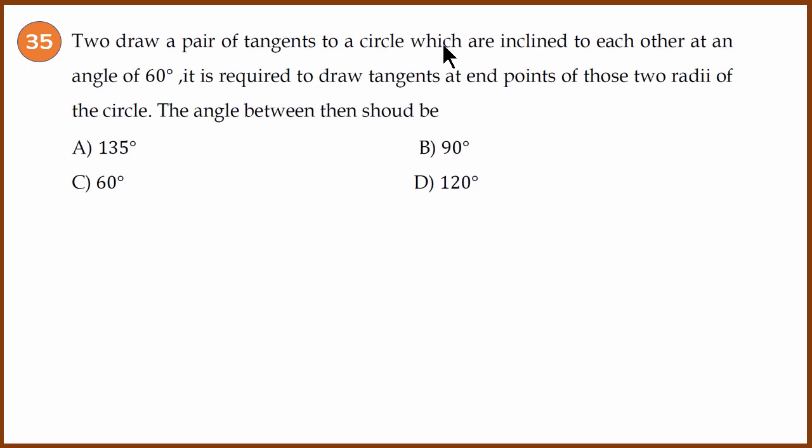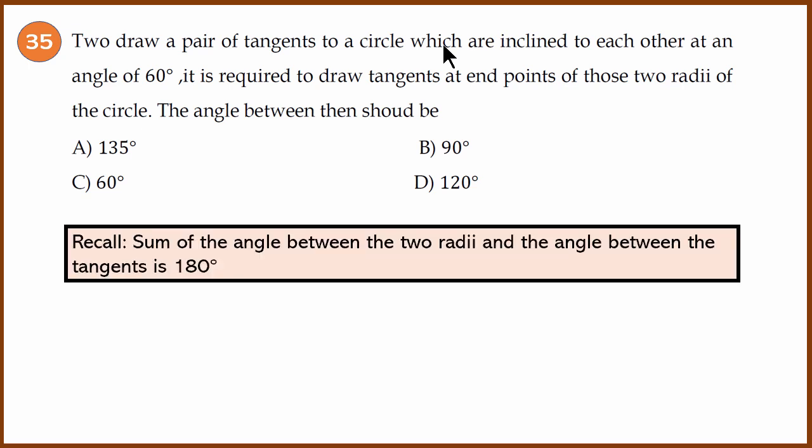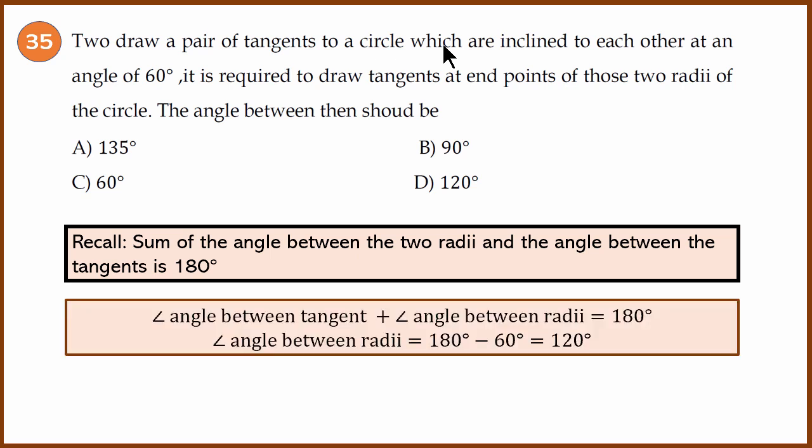Question 35: to draw a pair of tangents to a circle inclined to each other at an angle of 60 degrees, we need to draw tangents at the endpoints of two radii. The angle between tangents plus the angle between the radii equals 180 degrees. So the angle between the radii is 180 minus 60 = 120 degrees. The answer is 120 degrees.